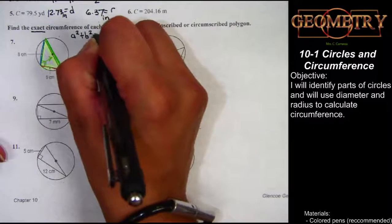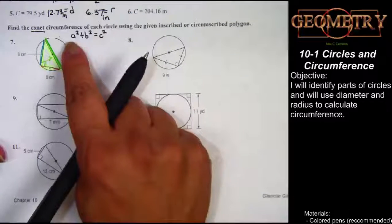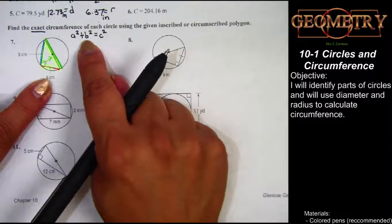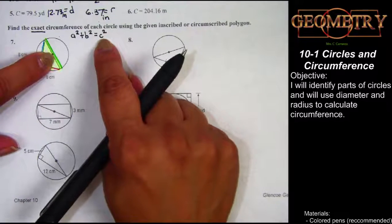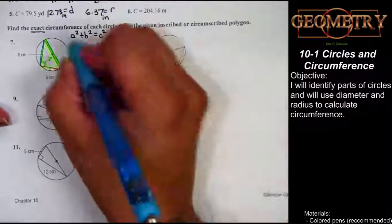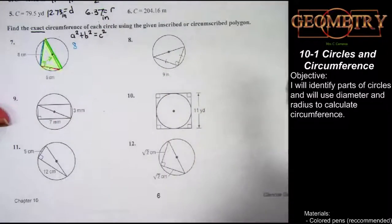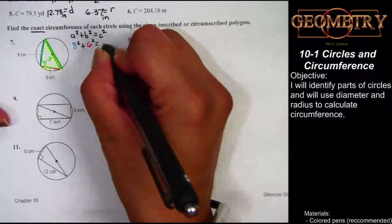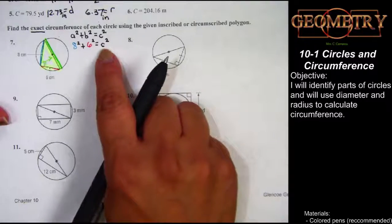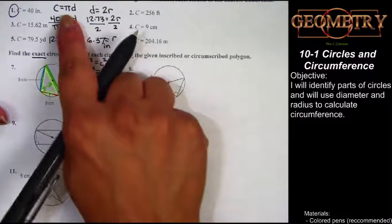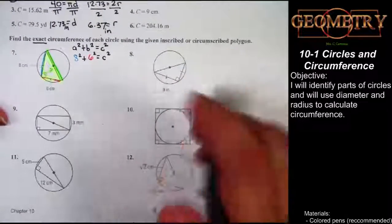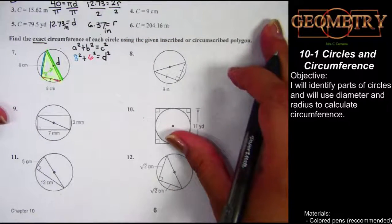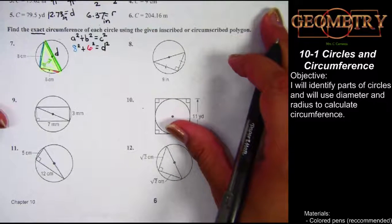The Pythagorean theorem reads a² + b² = c², meaning one leg squared plus the other leg squared equals the hypotenuse squared. I'll substitute the information I know: 8² + 6² = c² (the hypotenuse squared). Since the hypotenuse is also the diameter of my circle, I'll replace lowercase c with lowercase d for diameter, just so I don't confuse it with the uppercase C for circumference.